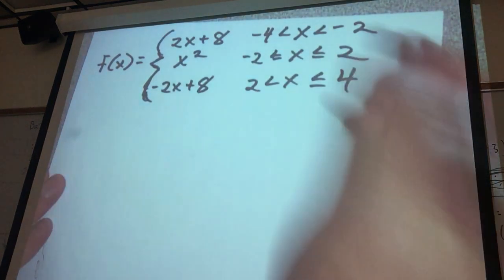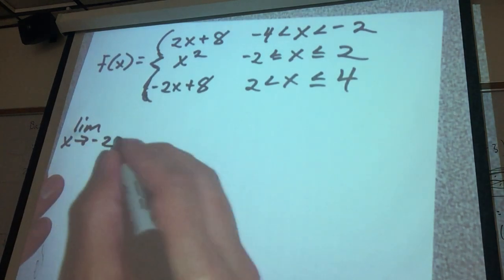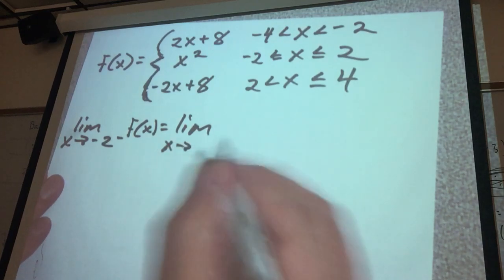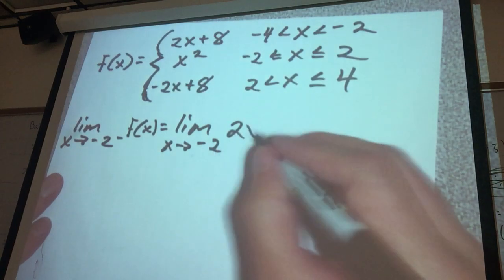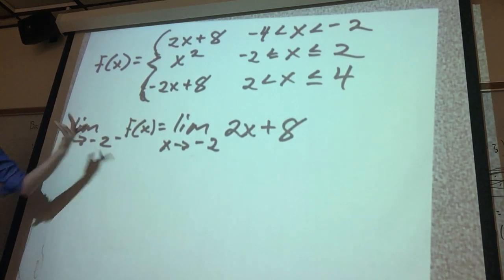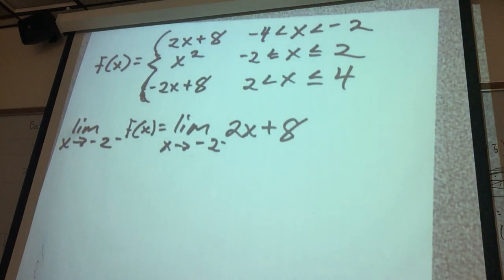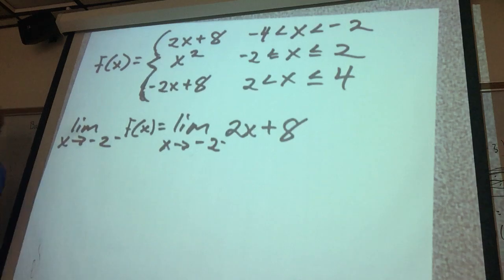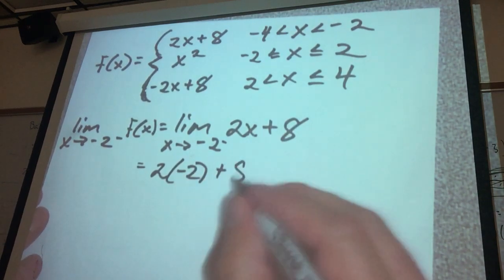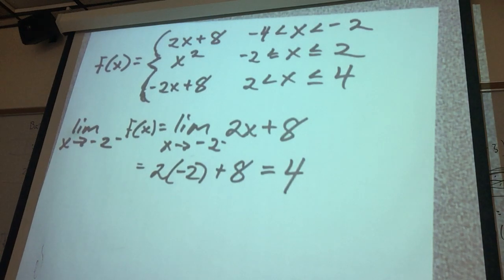Let's start with the point negative two. The limit as x tends towards negative two from the left of f of x equals the limit as x tends towards negative two from the left of 2x plus 8, because the function is defined as 2x plus 8 from the left. Plugging in: 2 times negative 2 is negative 4, and negative 4 plus 8 equals positive 4.